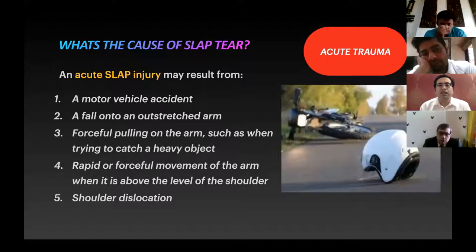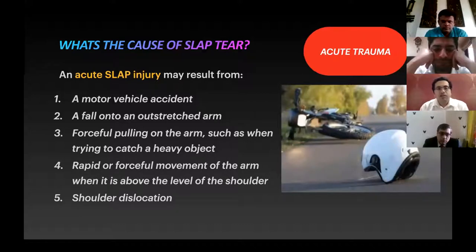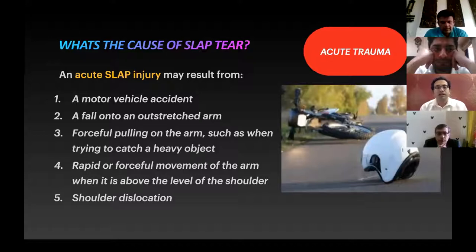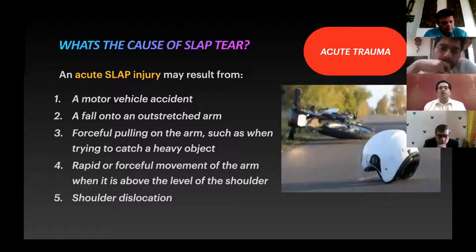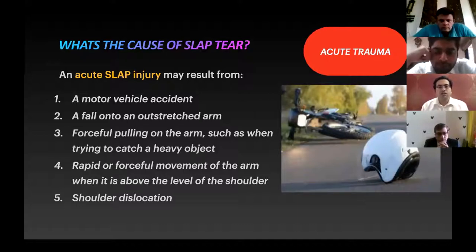When do you get SLAP tears? They can be divided into acute traumatic lesions and repetitive trauma or sports-related causes. Acute injury can happen in a motor vehicle accident, fall on an outstretched hand, forceful pulling of the arm such as when catching a heavy object in an overhead activity, or rapid forceful overhead arm movement. It is sometimes a component of shoulder dislocation — if you have a dislocation, don't fix your mind only on Bankart and Hill-Sachs; there may be an associated SLAP tear.